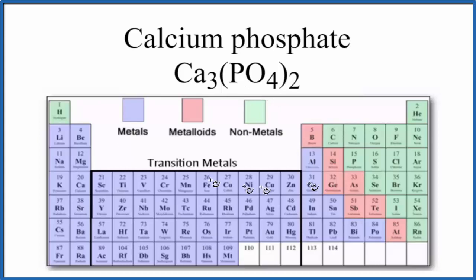When we look at the periodic table, calcium, that's a metal. And then phosphorus right here is a nonmetal, and oxygen is a nonmetal as well. So when we have a metal bonded to nonmetals, that is going to be ionic.